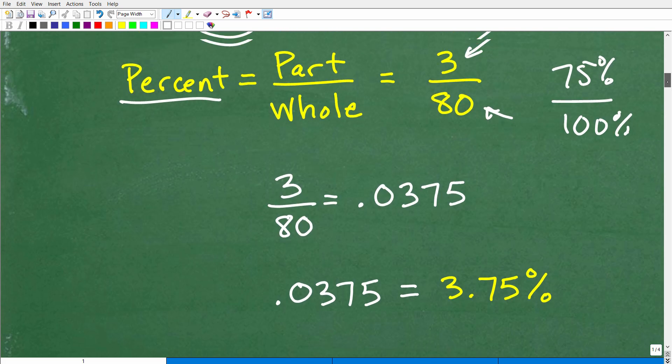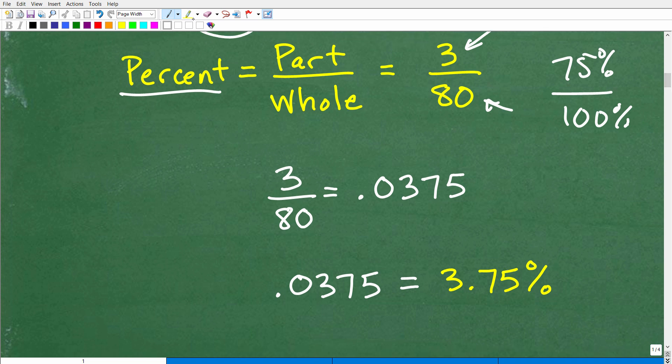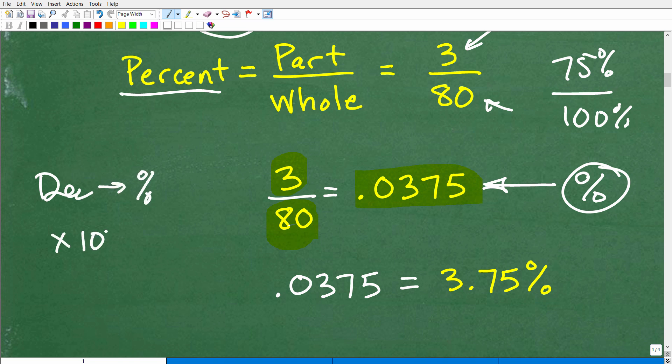And what can we do to fix this problem up? Well, what we can do is take 3 and divide it by 80 using our calculator. Or if you want to do this by hand, that's fine as well. So 3 divided by 80 gets us to the decimal 0.0375. But again, all we did is went from a fraction to a decimal. This is still not a percent. So how do we go from a decimal to a percent? Well, you need to be able to do that.